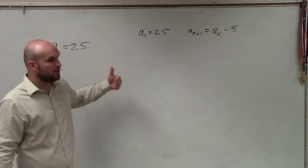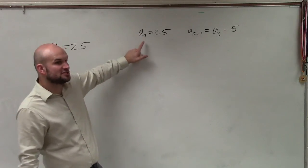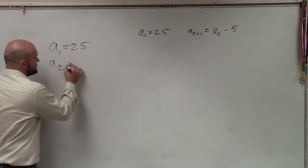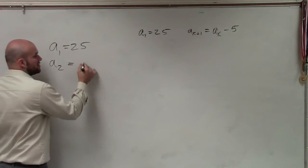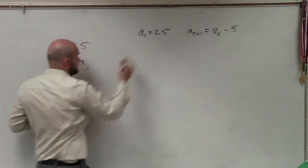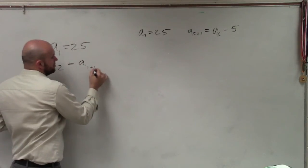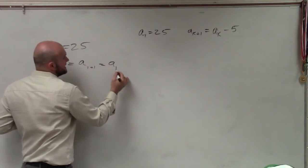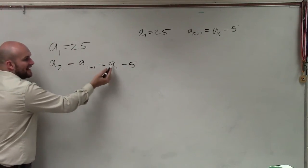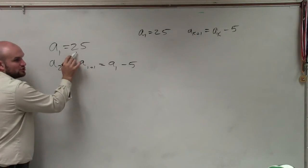So to find a sub 2, what we do is we plug in our previous term in for a sub k. So to find a sub 2, we plug in the previous term. So that's a sub 1, right? Plug in the previous term in for a sub k. Okay, a sub 1 plus 1 equals a sub 1 minus 5. Now, a sub 1 plus 1 is a sub 2. And a sub 1, we are given, which is 25.